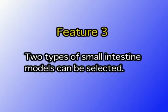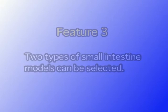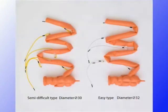Feature 3: The small intestinal model can be selected to match the level of the trainee. A semi-difficult type or easy type can be selected. In the future, the level of difficulty of each intestinal model will be changeable.